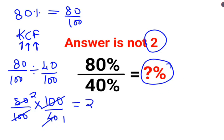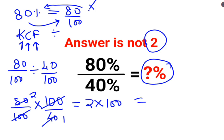Because they are looking for the answer in terms of percentage. Whenever you have a percent and you want to convert it into a number, you divide it by 100. But if you have a number and want to convert it into a percentage, you multiply by 100. So here this would be 2 multiplied by 100, and the answer is supposed to be 200 percent.